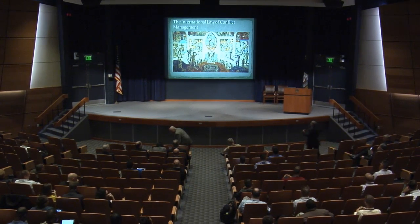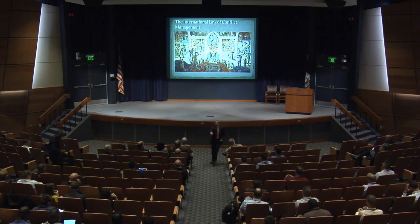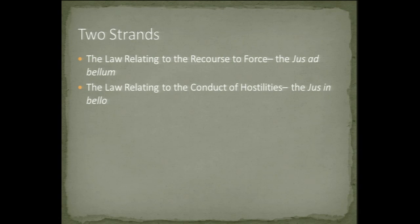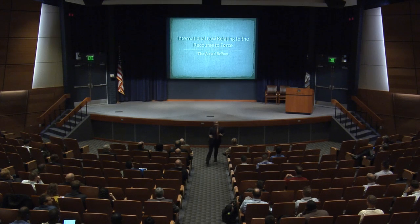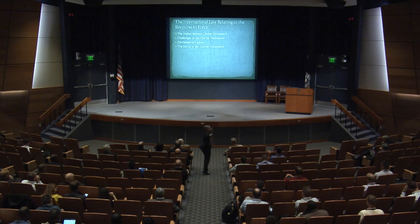The international law of conflict management involves two strands. The law relating to the recourse to force — sometimes referred to as the jus ad bellum — which are the norms relating to when an actor can initiate the use of military force against another international actor. And then the law relating to the conduct of hostilities, sometimes called the jus in bello, the laws of war, the laws of armed conflict, or international humanitarian law. Our focus today will be on the jus ad bellum.